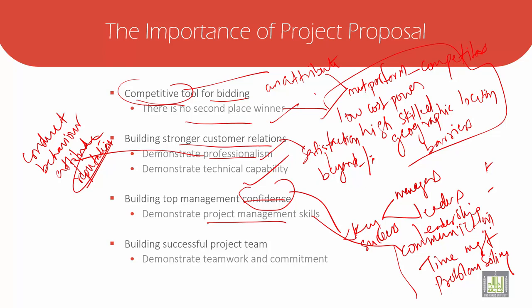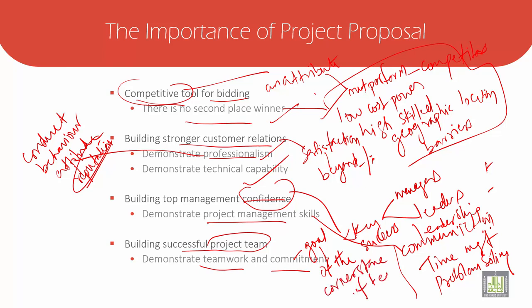Then we have building a good successful project team. If you have all of this, you will automatically have a good successful project team. It should demonstrate good teamwork and commitment. Commitment is actually one of the cornerstones of teamwork — it occurs in each member so that the team focuses on achieving the team's purpose over individual objectives, with a good focus on their objectives.